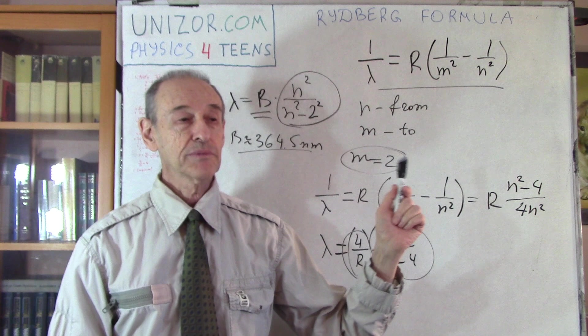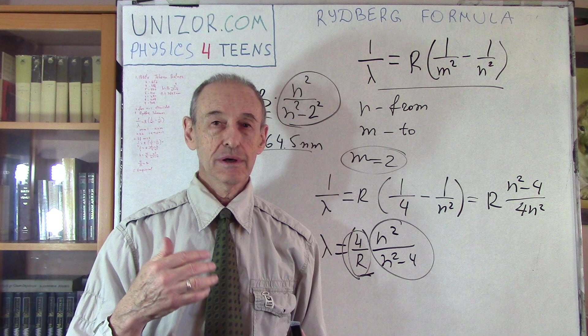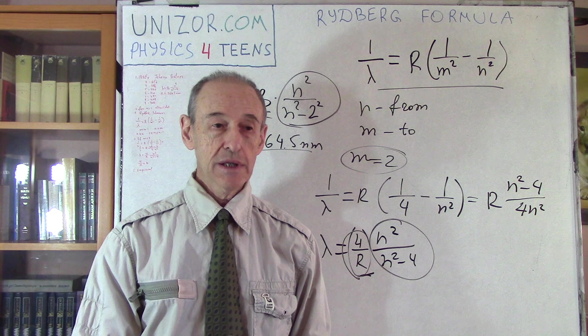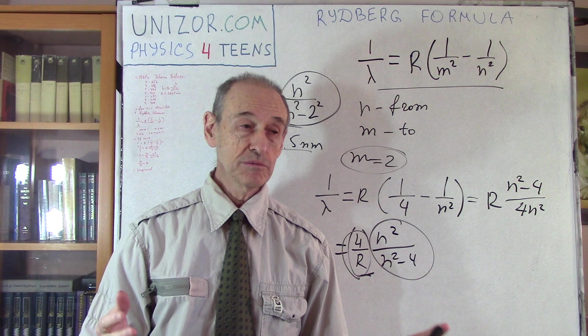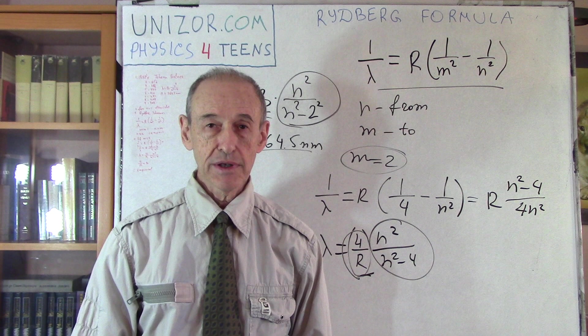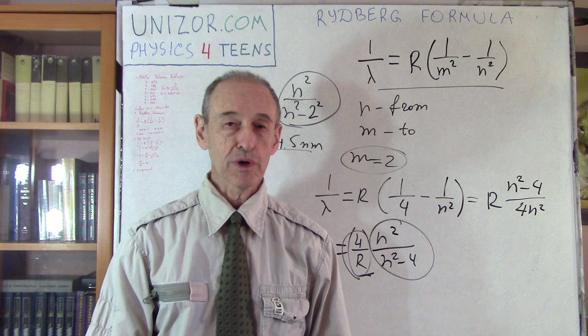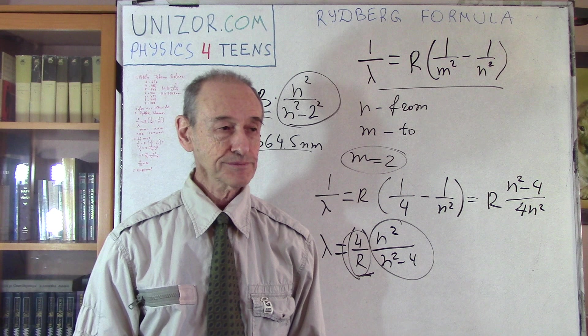And a true explanation of why this formula is what it is came much later. It came with development of Bohr's model. And, basically, even Bohr himself had to just postulate certain things, which he did not himself explain. It was explained later on, and we will talk about this in the next lecture, about Bohr's atom model.